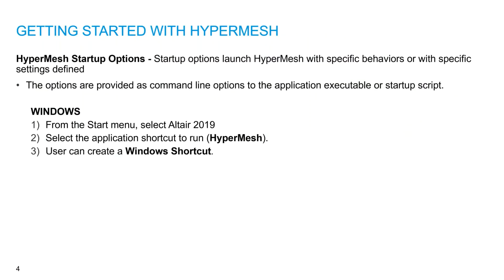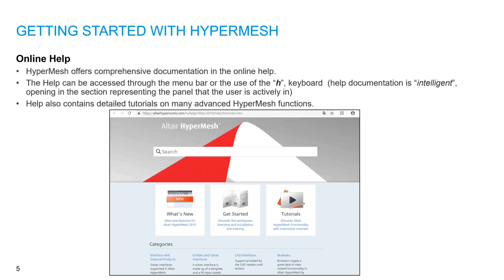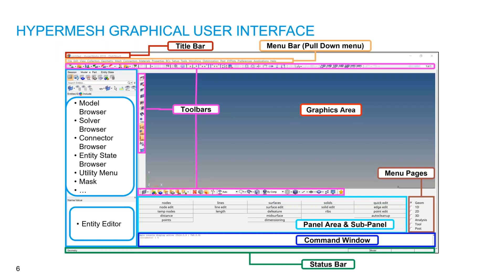How do we start HyperMesh? Go to the Start menu, select Altair 2019 — this version may be 2017 or 2018 — and click on HyperMesh to open it. You can also access Online Help. HyperMesh has built-in help. When you open HyperMesh, the graphical user interface will automatically open.